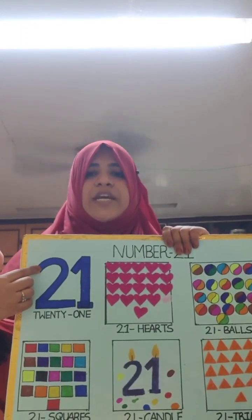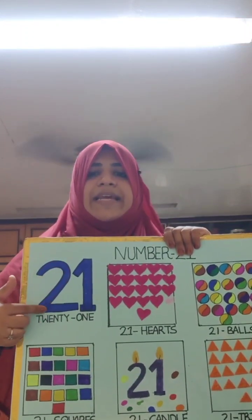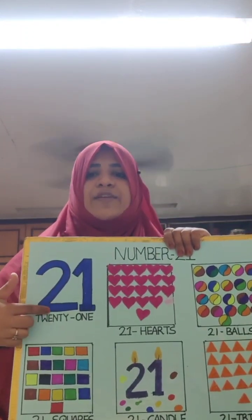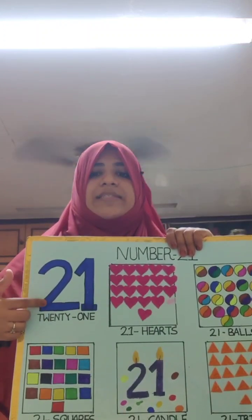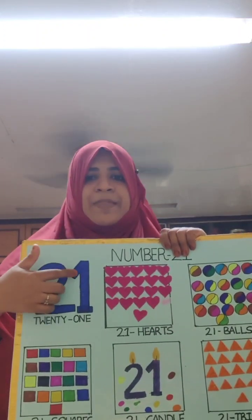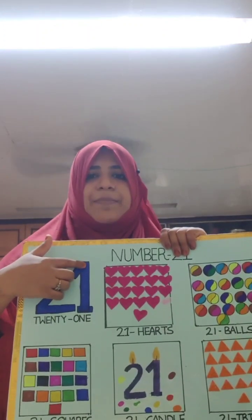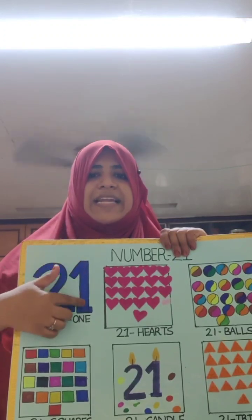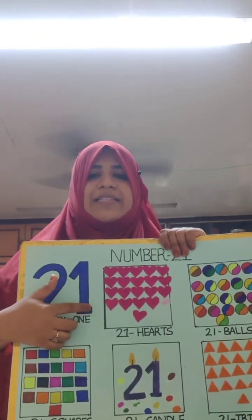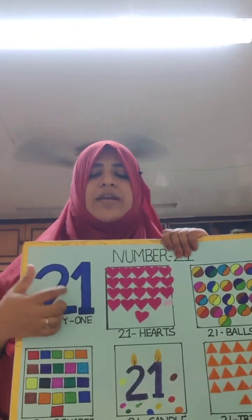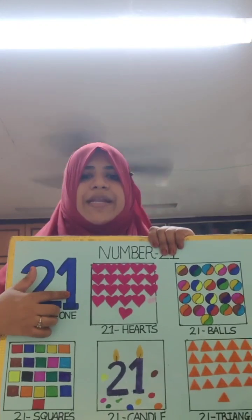First, you have to make a candy cane like this, and then you have to put the shoe — this is number 2. Small sliding line up, a standing line down, and a sleeping line — this is 1. 2, 1, 21.